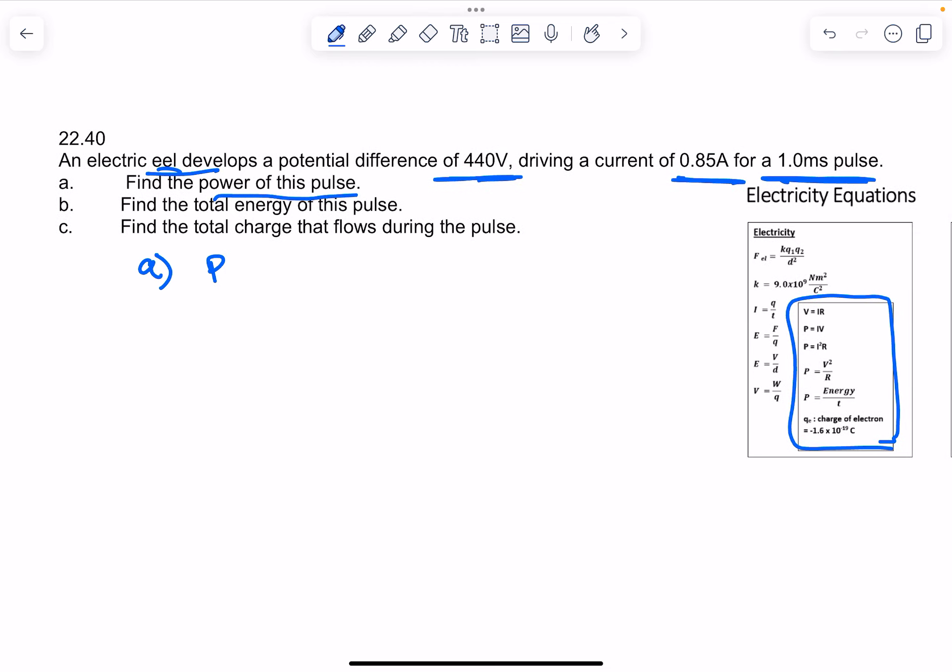For letter a, you're going to use P equals IV. Notice you're not going to use the time on part a. You're just trying to find the power—you know the voltage and you know the current, and you can solve for that.